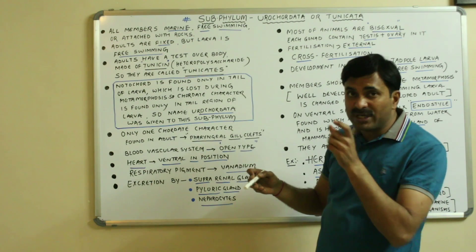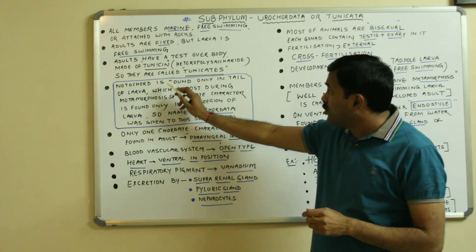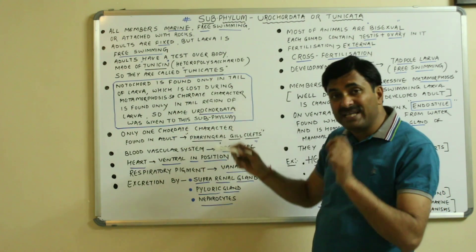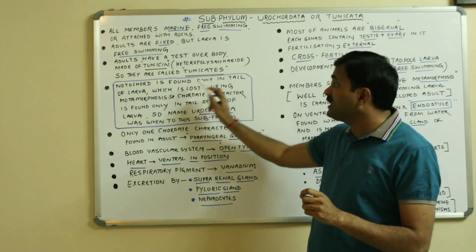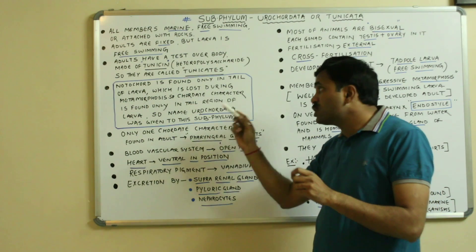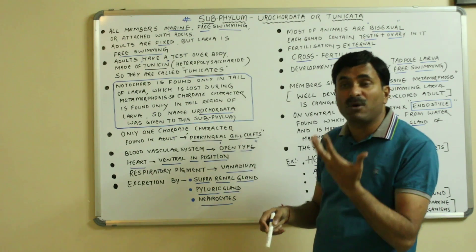Why they are called Eurochordates? You can see again. Notochord is found only in the tail of the larva. Euro means tail.